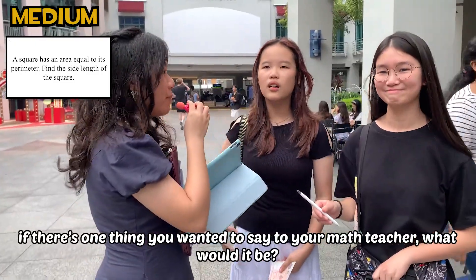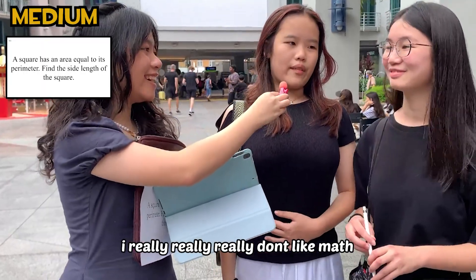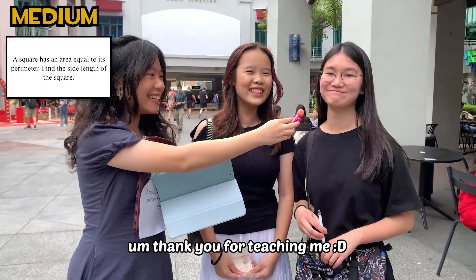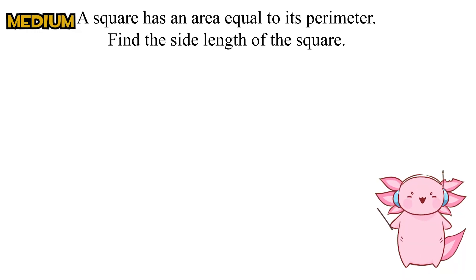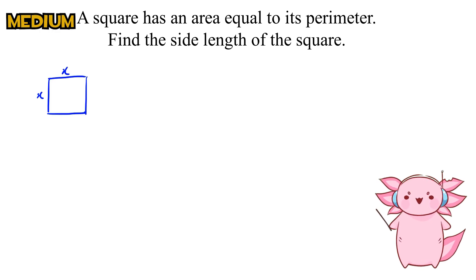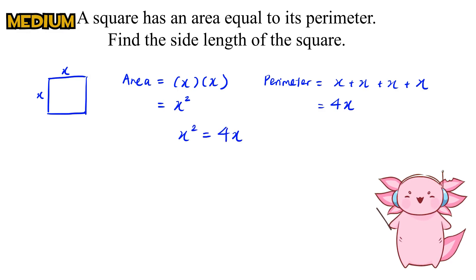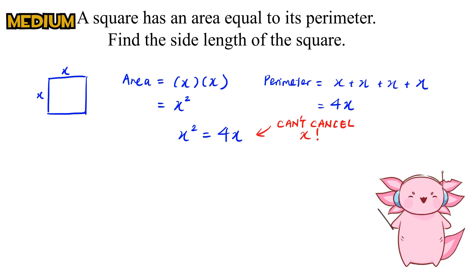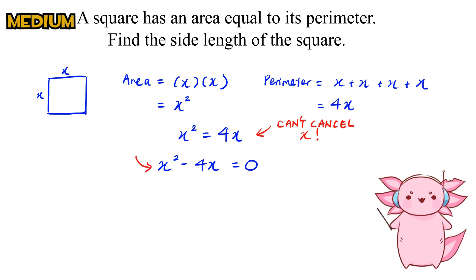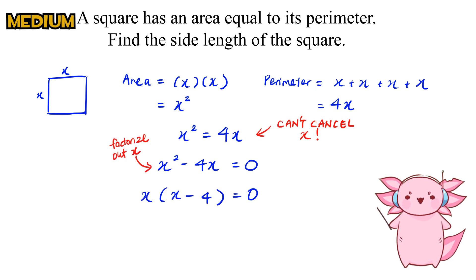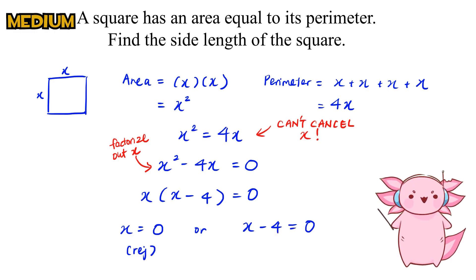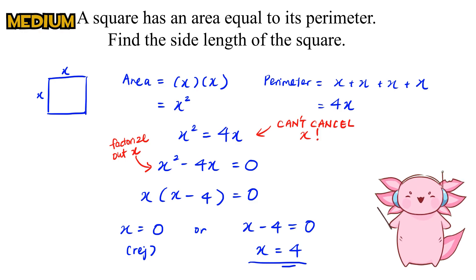If there's one thing you want to say to your math teacher, what would it be? I really, really don't like math. Thank you for teaching me. Their method was not entirely correct, but I was feeling generous. So let's imagine this square has side length x. Since the area is x² and the perimeter is 4x, we equate both. We can't cancel the x on both sides — instead, shift everything to one side and factorize out x. By the zero product rule, x equals 0 (rejected) or x minus 4 equals 0, giving us x equals 4.